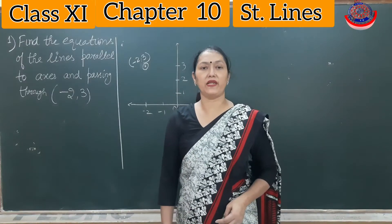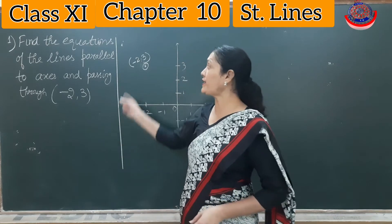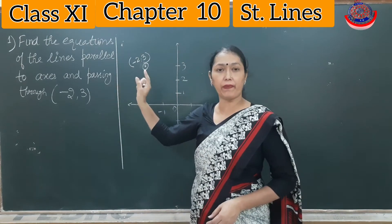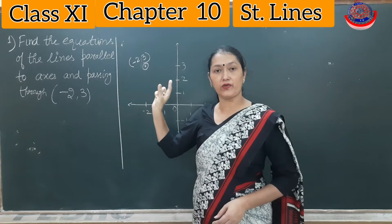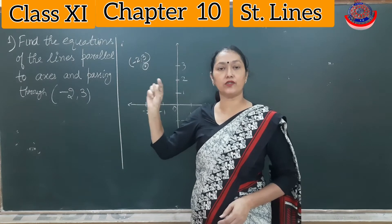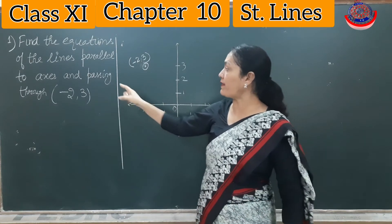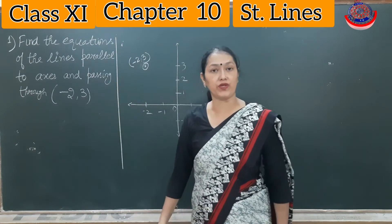The first example asks us to find the equations of the lines parallel to the axes — one line parallel to the x-axis and the other to the y-axis — where both lines pass through the point (-2, 3).